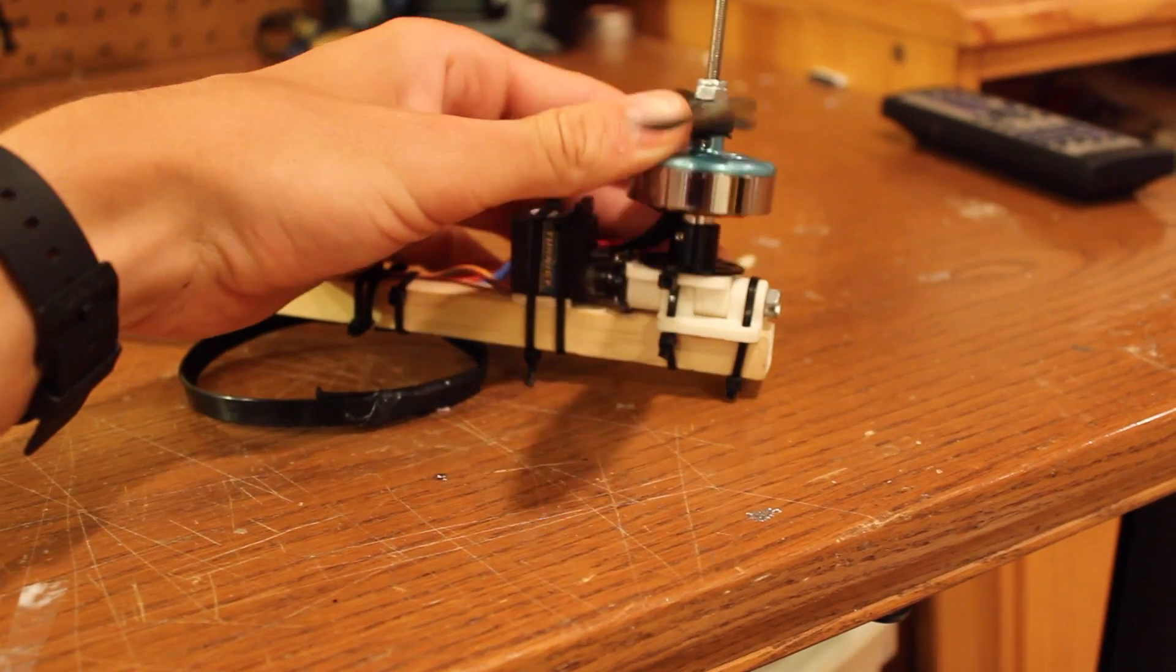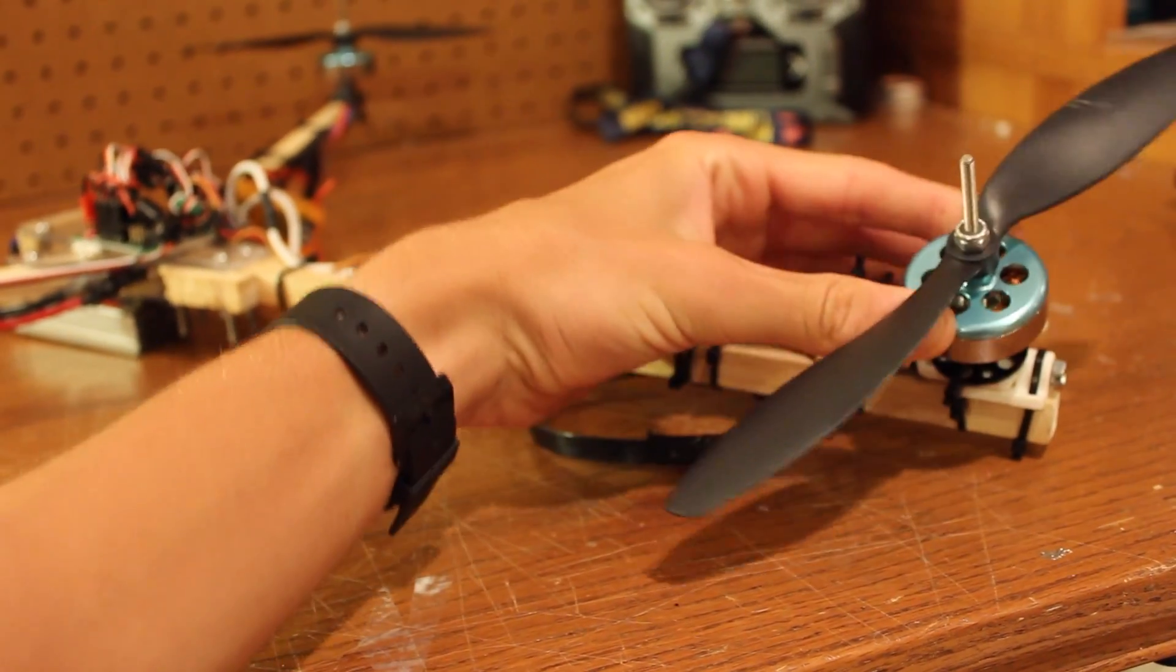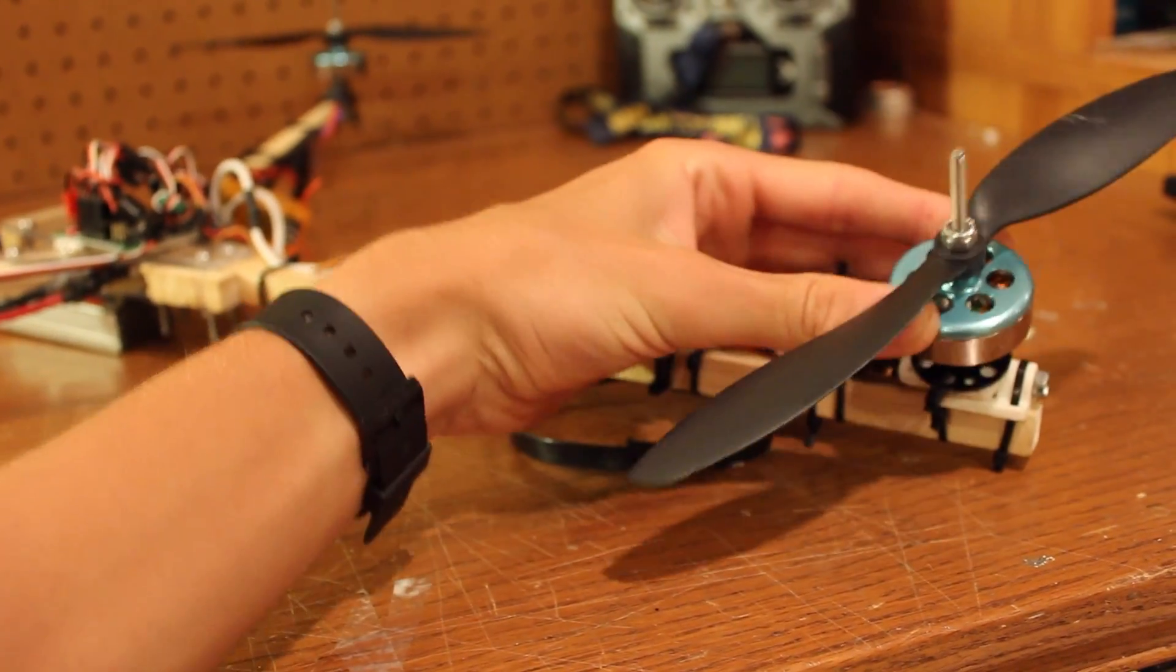A tricopter is a little different, though. It uses the servo on the back that moves the motor back and forth. This way it gives the yaw through actual movement of the motor, rather than speeding up and slowing down certain motors.